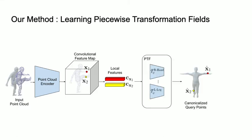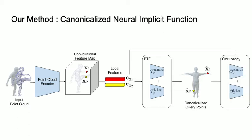We propose novel piecewise transformation fields, or PTF, to transform arbitrary query points from the pose space to the canonical space. We conduct implicit surface prediction in the canonical space. This canonicalization greatly improves the generalization of our networks, resulting in better accuracy with fewer parameters.